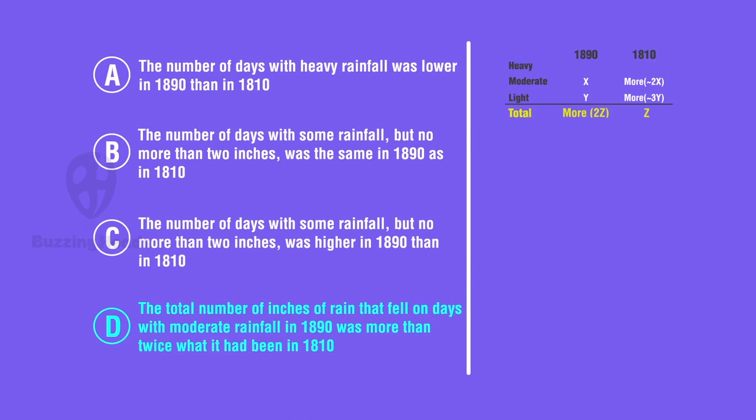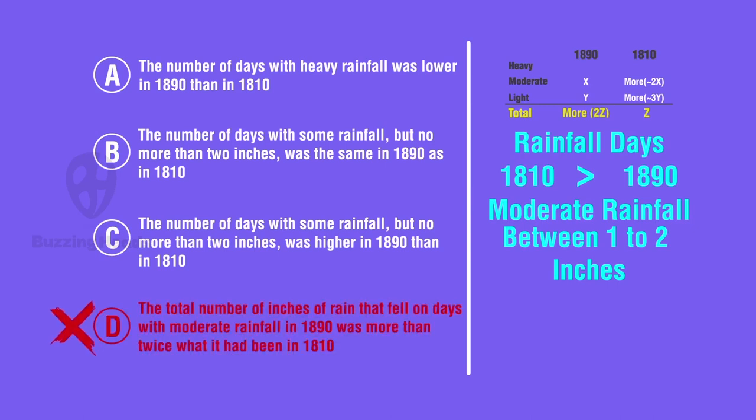D. The total number of inches of rain that fell on days with moderate rainfall in 1890 was more than twice which had been in 1810. Already, the total rainfall days are more in 1810 than in 1890. And the moderate rainfall are between one to two inches. There is no way that total rainfall inches in 1890 will be more than twice that of 1810. So, D is eliminated.